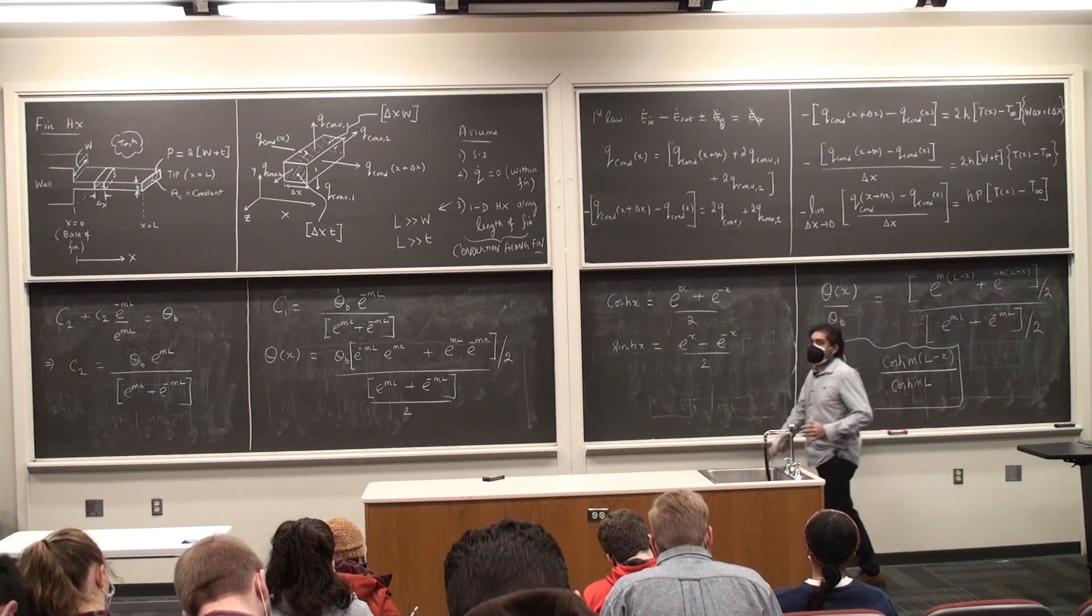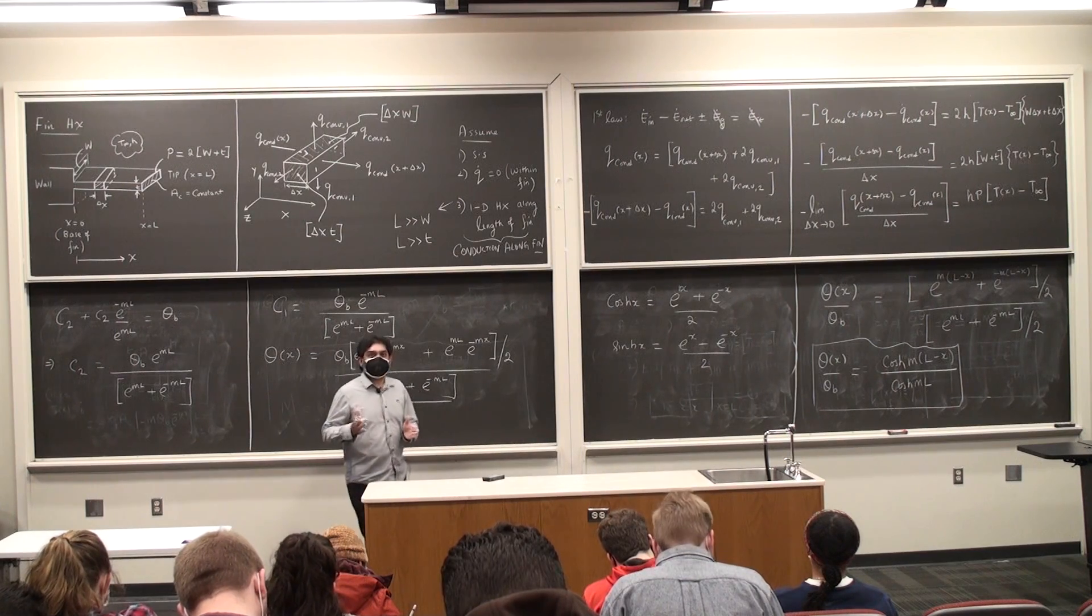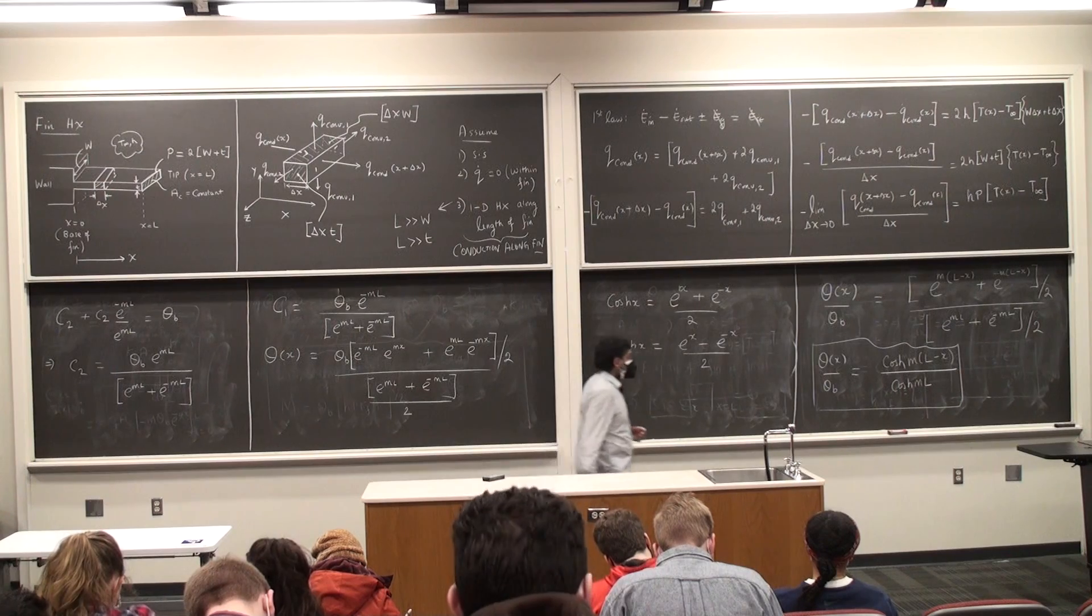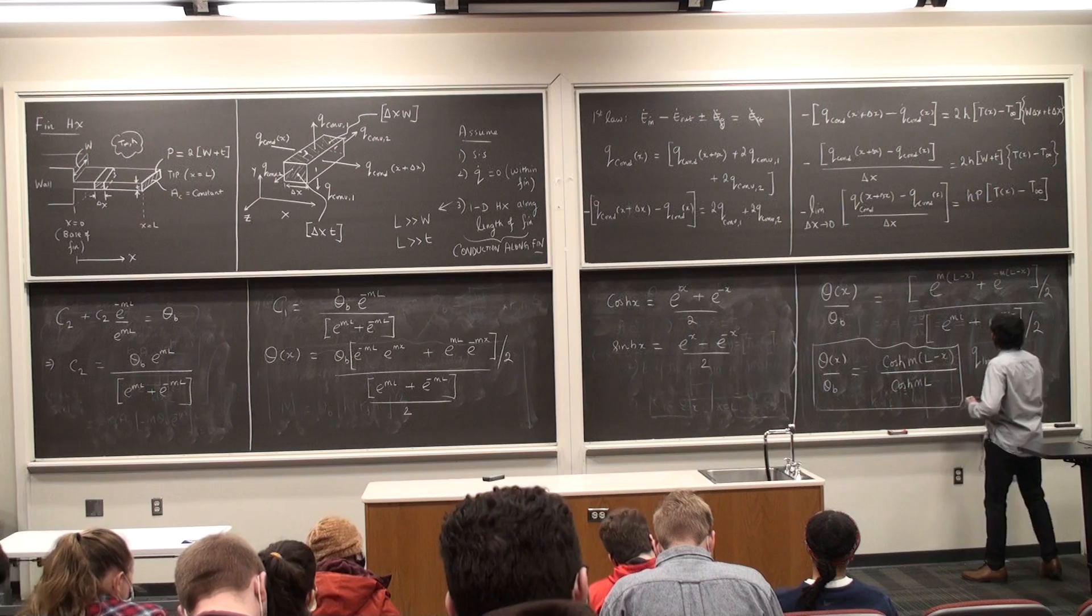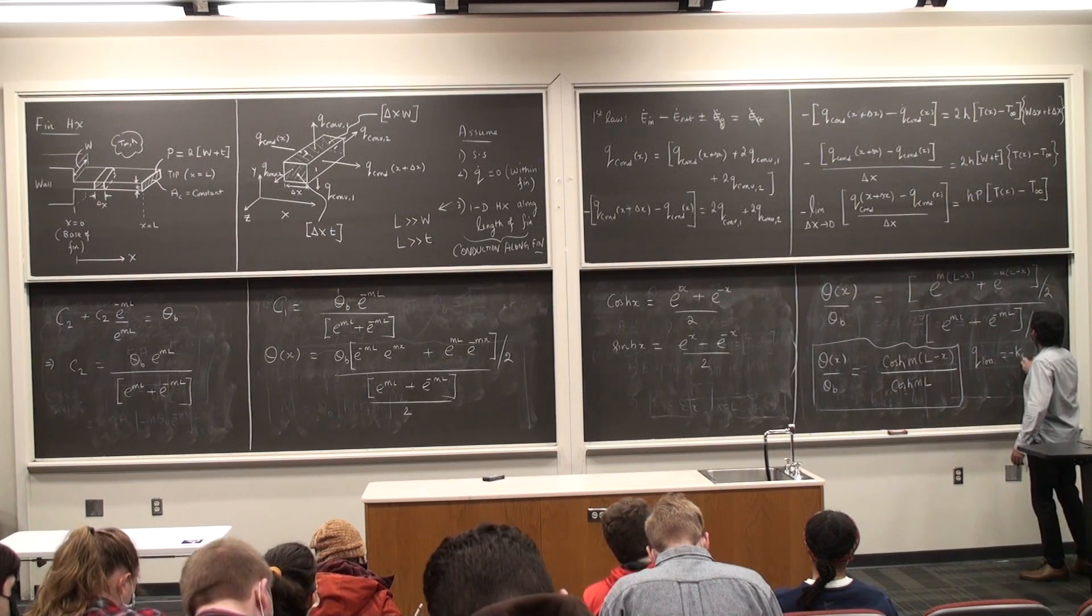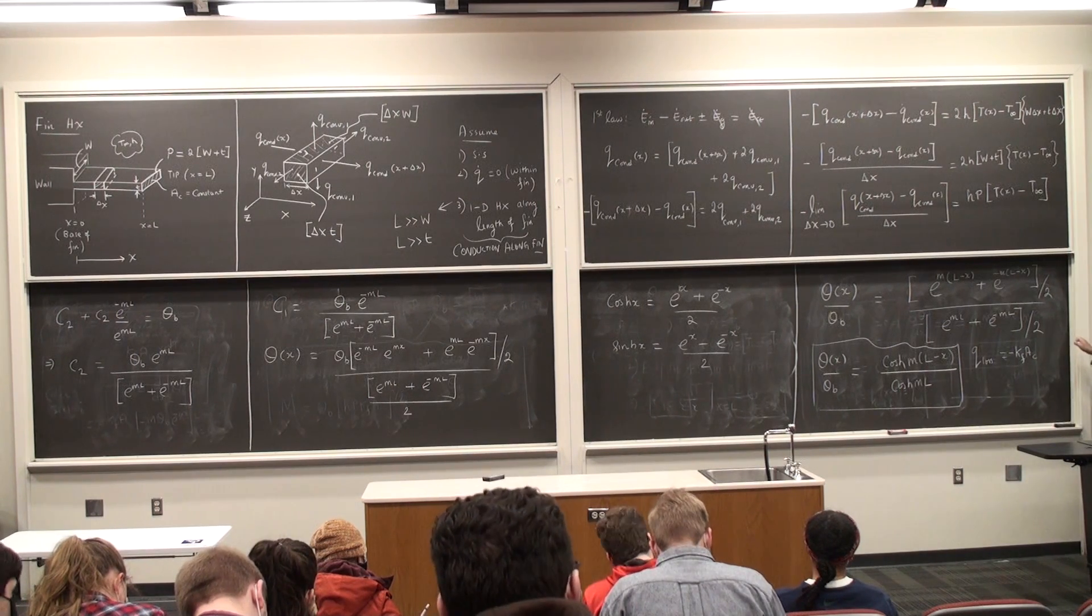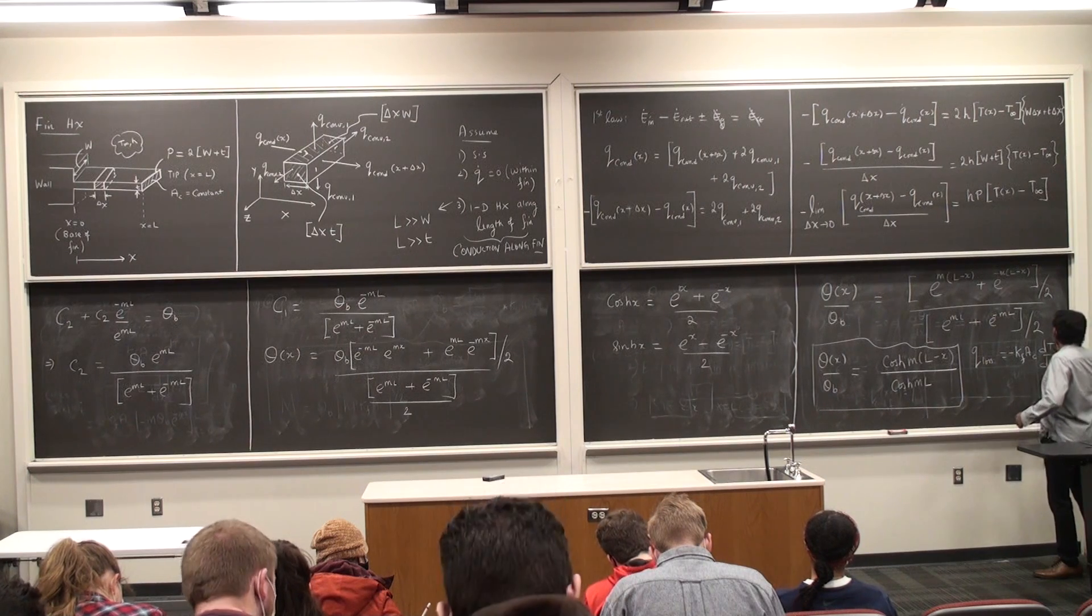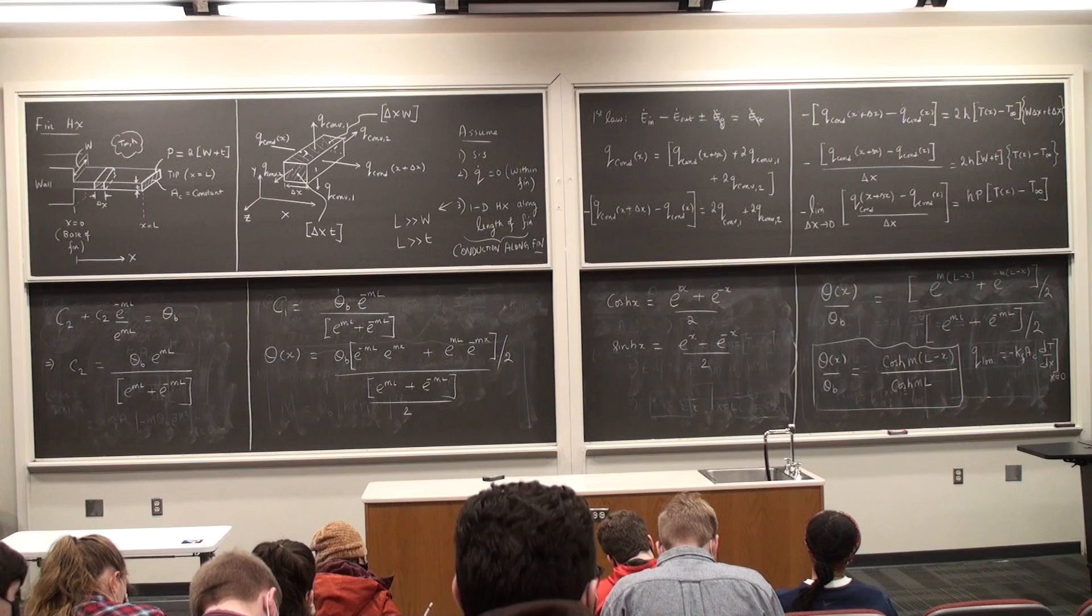We want to do the same thing, obtain the heat loss rate by calculating the gradient at the base of the fin. So I'm going to write the equation. So q loss is minus kf, the area of cross section, dt by dx at x is equal to 0.